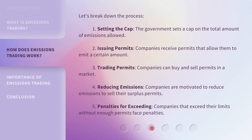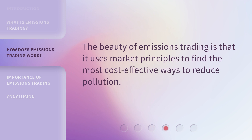4. Reducing emissions: companies are motivated to reduce emissions to sell their surplus permits. 5. Penalties for exceeding: companies that exceed their limits without enough permits face penalties. The beauty of emissions trading is that it uses market principles to find the most cost-effective ways to reduce pollution.